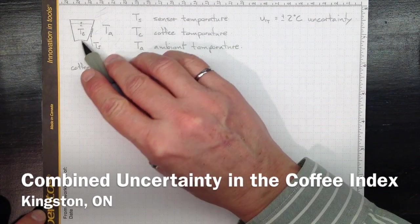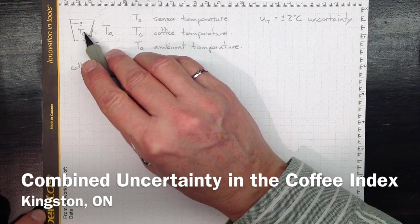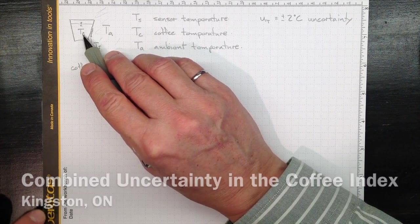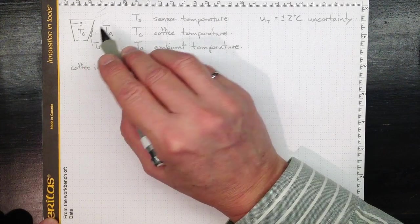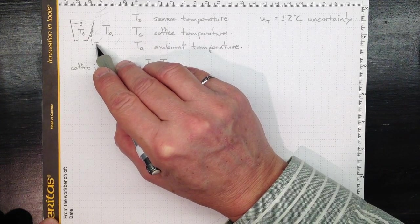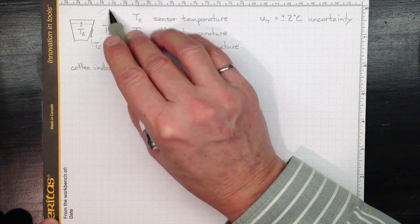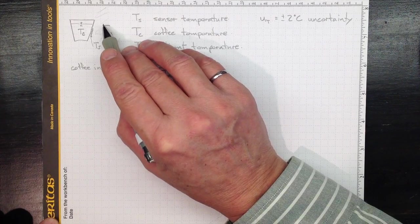Suppose we have a coffee cup here with coffee inside it at some temperature T coffee. And on the outside of the cup we've got a sensor which is at TS and air around it which is at ambient temperature TA.